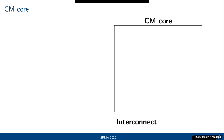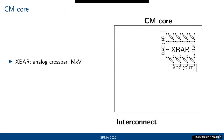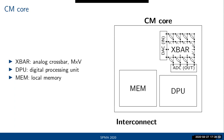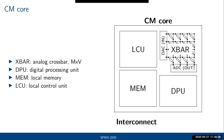Looking closer at one computational memory core: it has an analog crossbar for performing matrix-vector multiplication, with digital-to-analog converters on the input and analog-to-digital converters on the output. There is also a digital processing unit for operations that cannot run on the crossbar — such as activation functions like ReLU. And there is some local SRAM memory and a control unit that controls the execution of a single core.